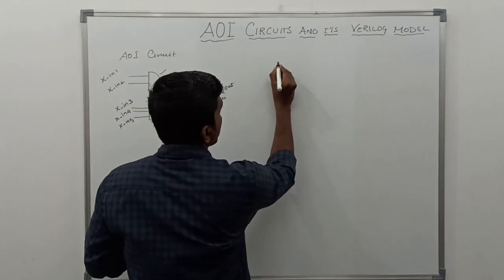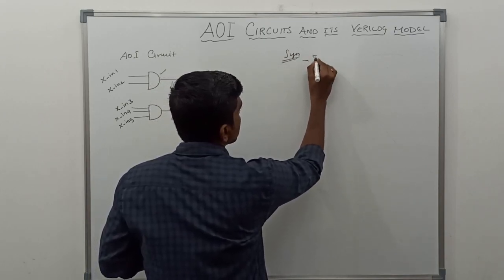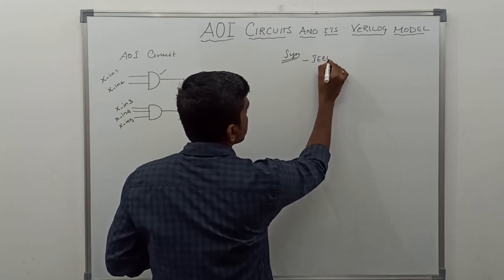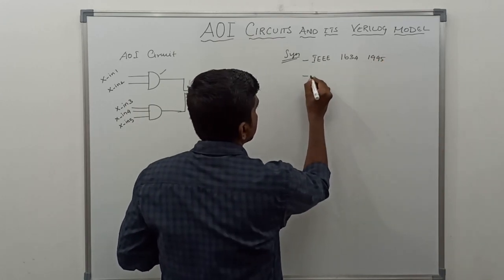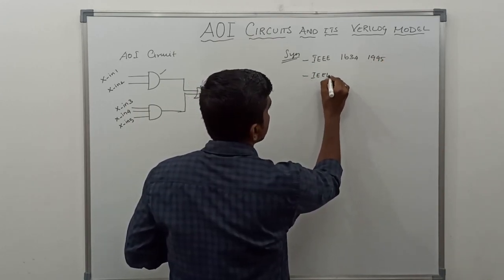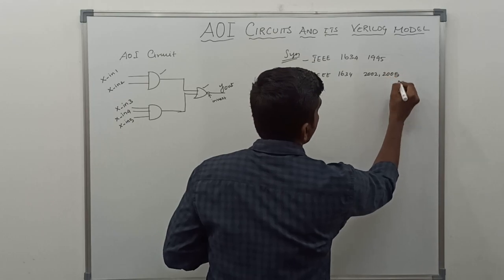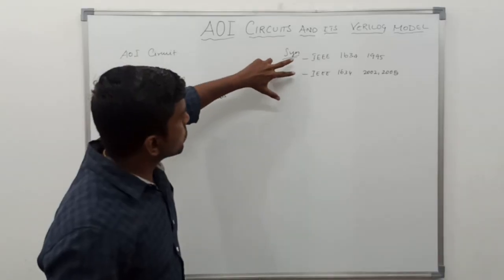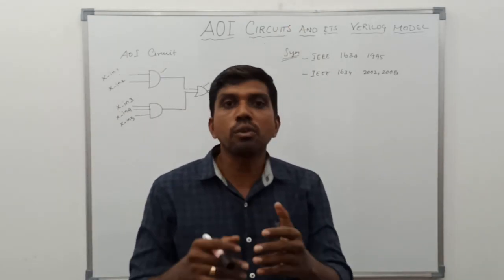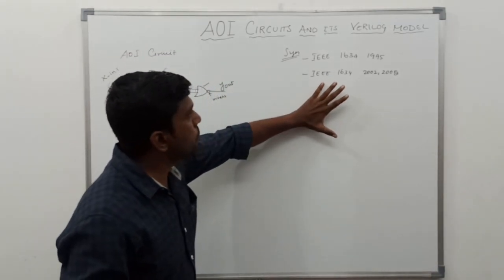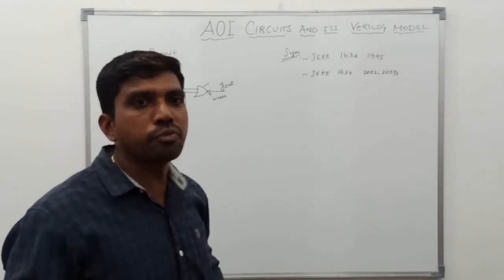In this Verilog HDL code, we can follow two types of syntax. The first is IEEE 1634-1995, and the second syntax is IEEE 1634-2002/2005. These two syntaxes differ based on the input and output port declaration, and we will discuss that with the help of the program.